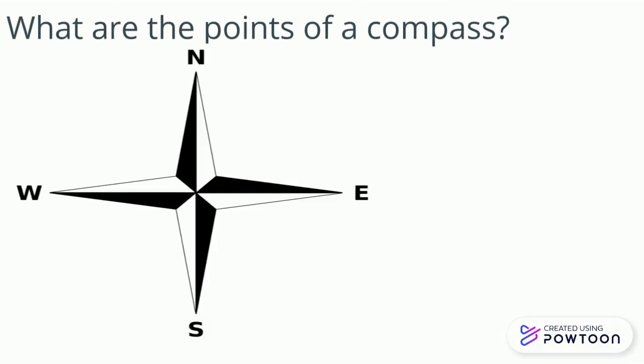This is how we draw the points of a compass. North is at the top, East is on your right, South is at the bottom, West is on your left.